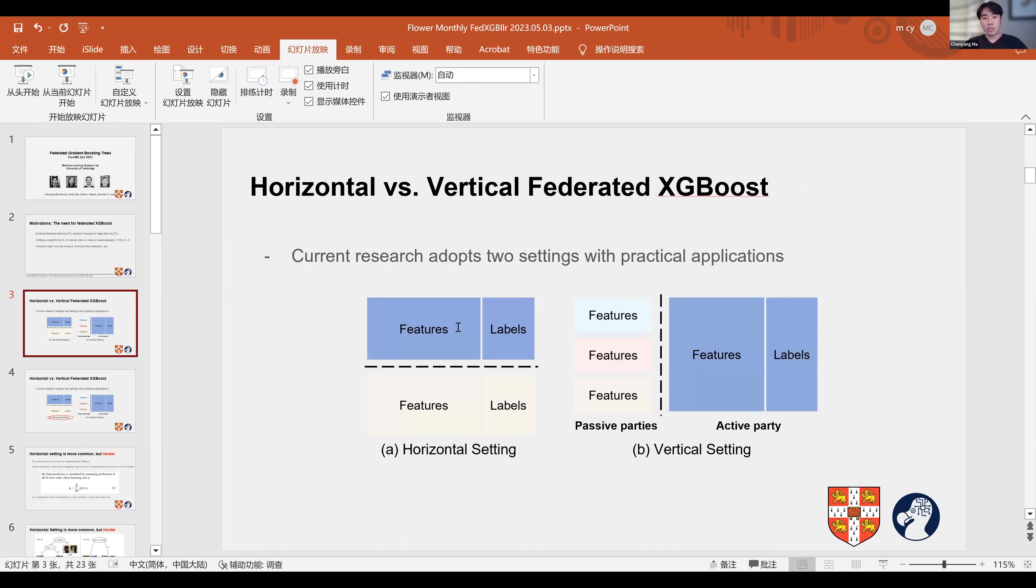Current research on federated XGBoost mainly defines two settings. The first one is the horizontal setting. In this setting, clients' data sets have identical feature space with different sample IDs. The central server sends the global model to all clients and aggregates the updated model parameters after each communication round.